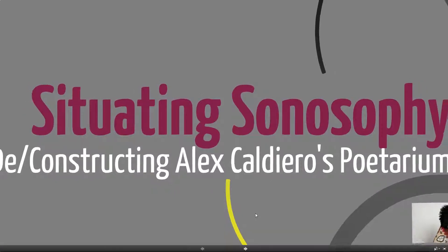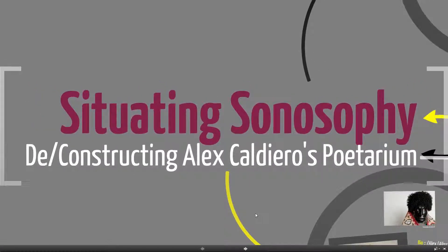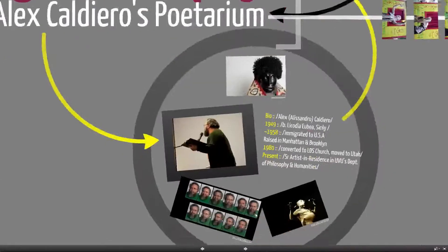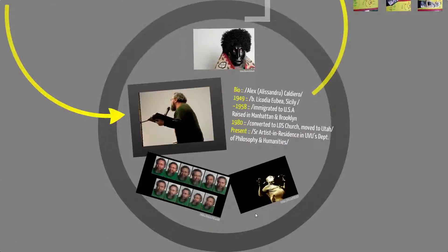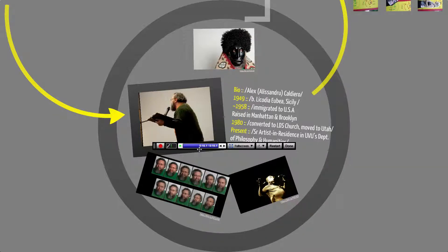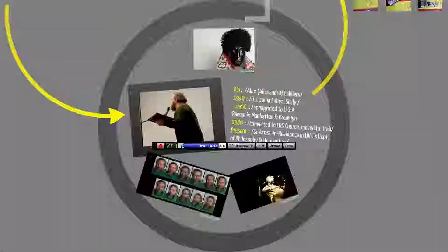You can move through your presentation however you want to. When you're done, hit Alt-P and it will pull your controls back up and you can preview what you've recorded.